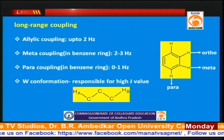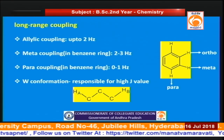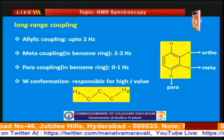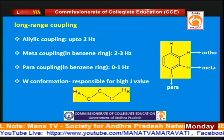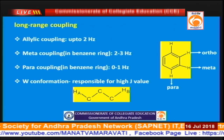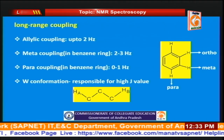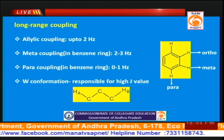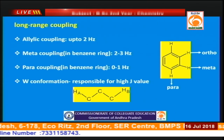Whenever the coupled protons are separated by more than three bonds, that is known as long-range coupling, which generally occurs in allylic systems and aromatic systems. Whenever allylic coupling occurs, it is in the range of 0 to 2 Hz. In the case of meta coupling, the value is in the range of 2 to 3 Hz, whereas para coupling is in the range of 0 to 1 Hz. Generally, the J value will be high in alkane systems with a W conformation.